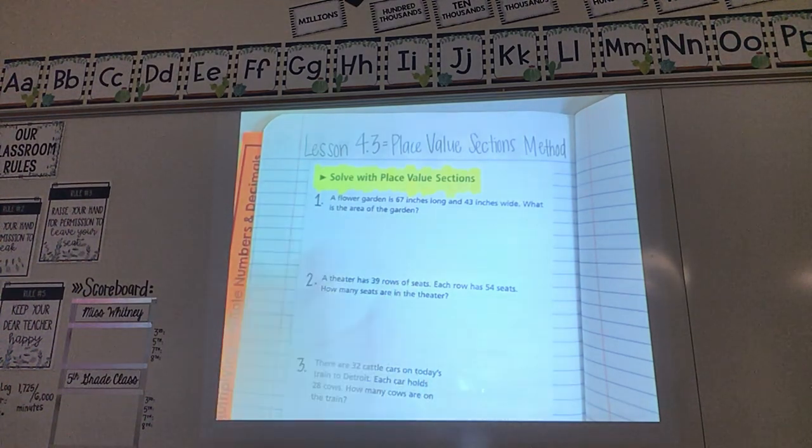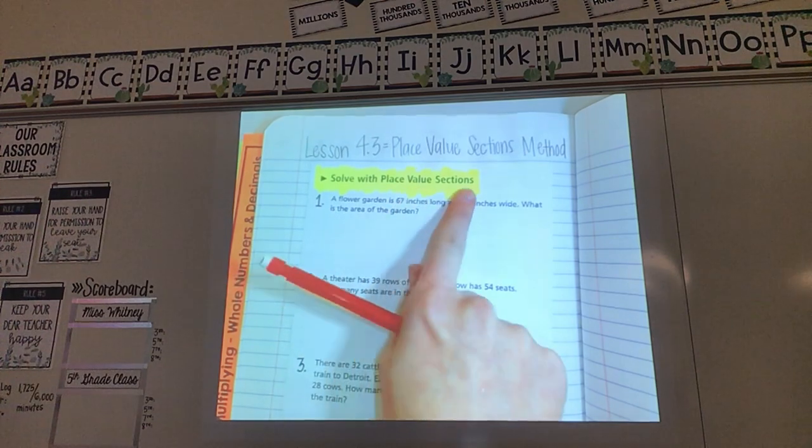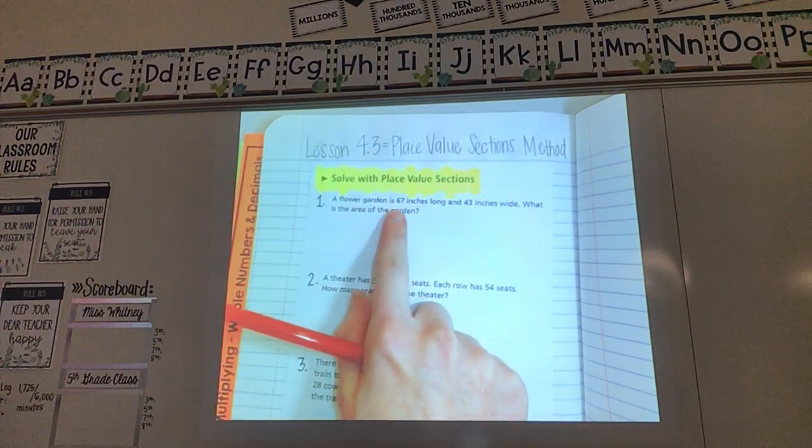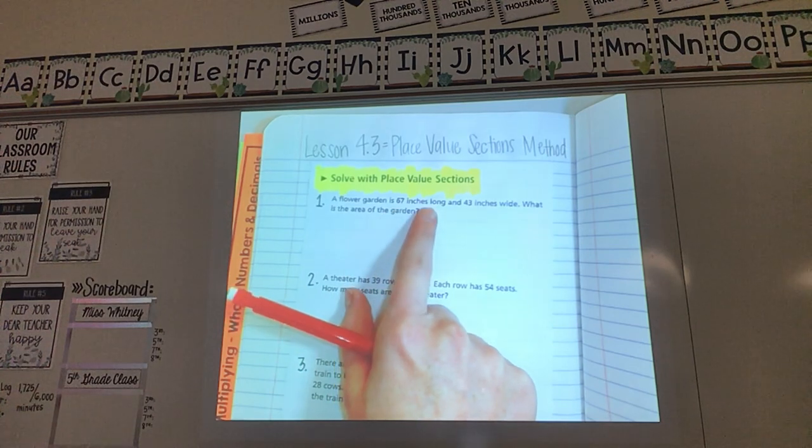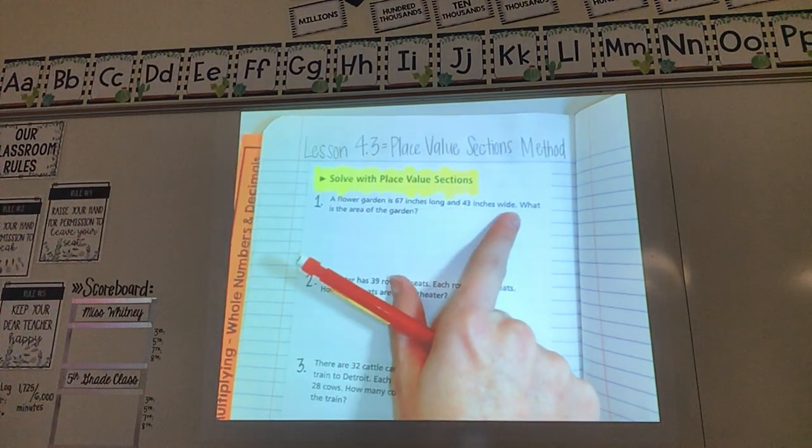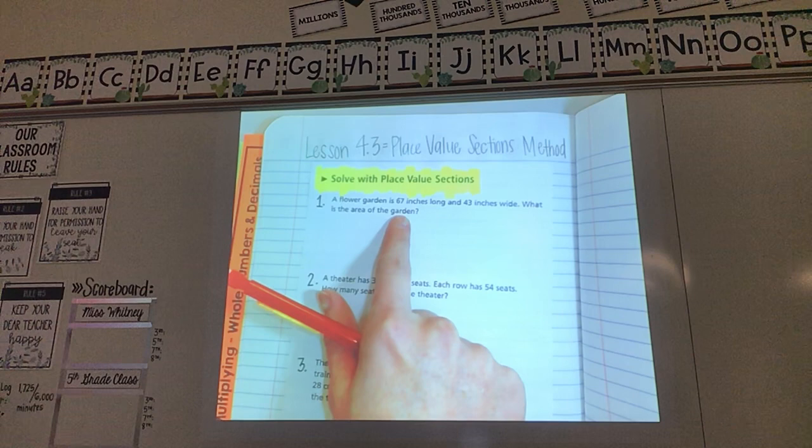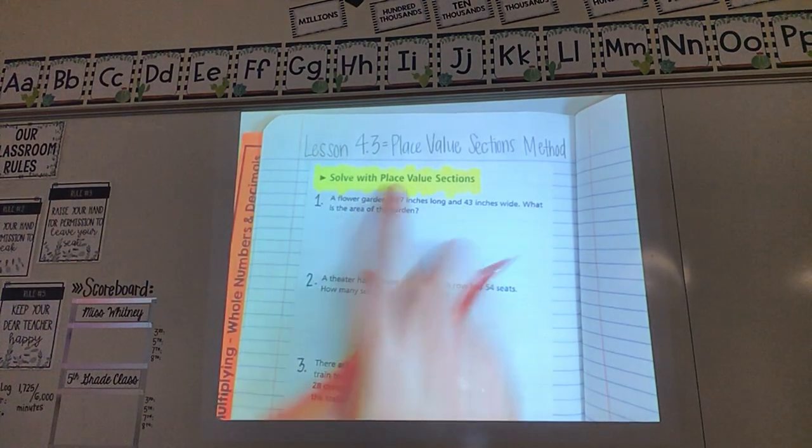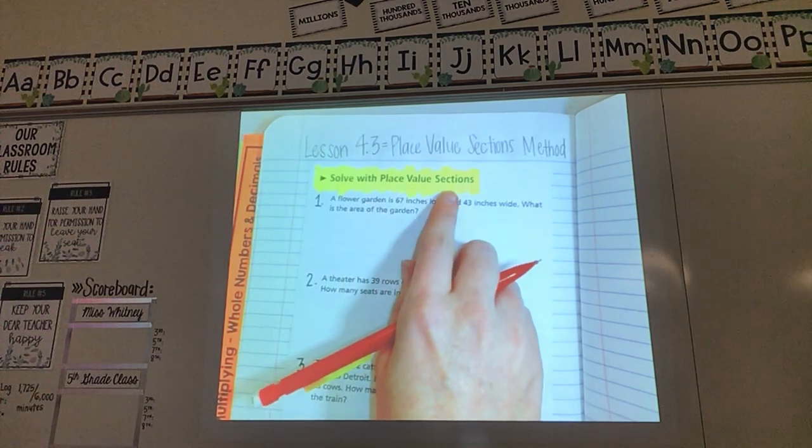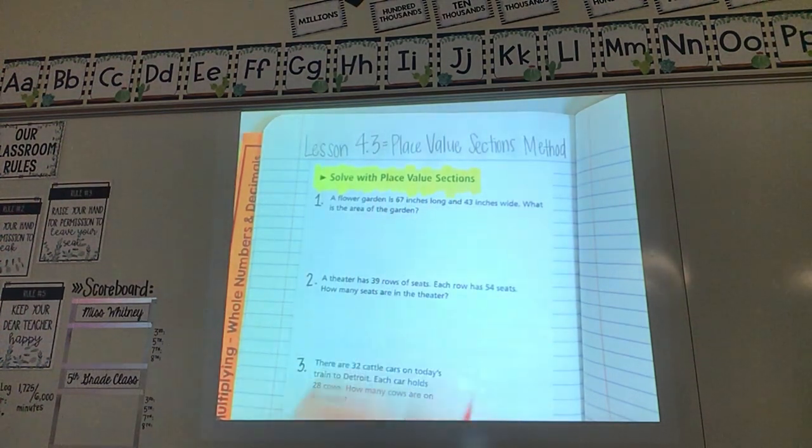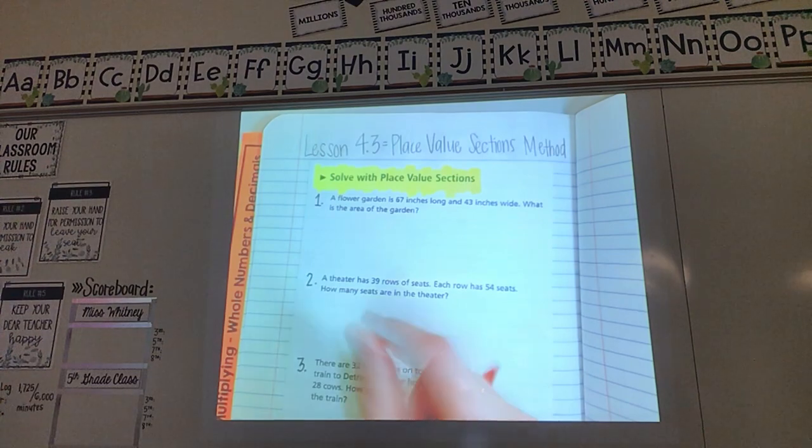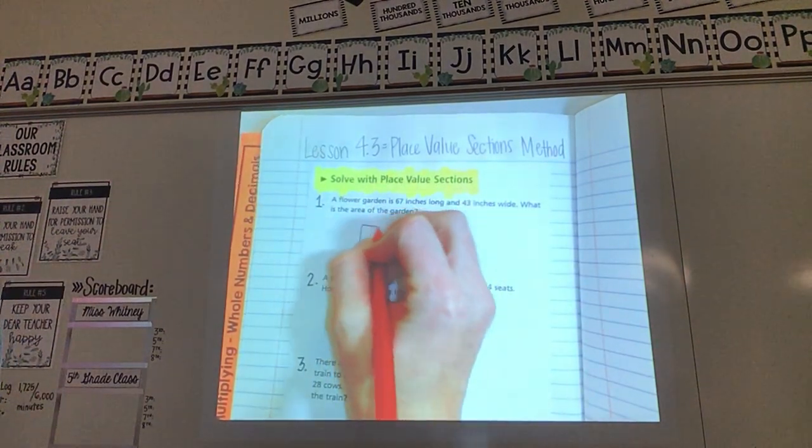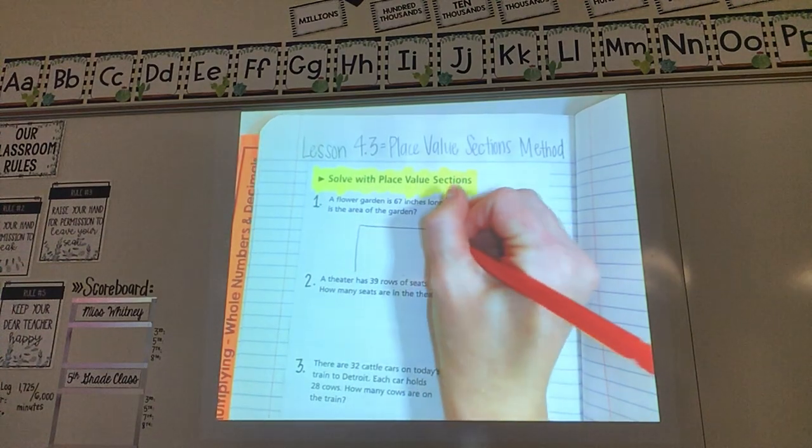We're gonna go ahead and start. So it says solve with place value sections. Number one, a flower garden is 67 inches long and 43 inches wide. What is the area of the garden? I know we're multiplying today and when it says place value sections you should automatically think we are using the box. So remember we're gonna draw a box. We're gonna be writing in here so draw it big enough for you to be able to write in.